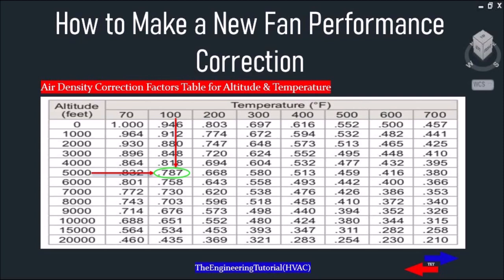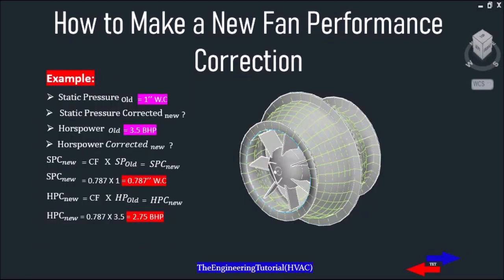The table allows us to select a correction factor based on altitude in feet and temperature. For an altitude of 5,000 feet above sea level and a temperature of 100 degrees Fahrenheit, the table reads a correction factor of 0.787. Static pressure old is 1 inch of water column, and horsepower old is 3.5; we need to find the corrected new values for both.